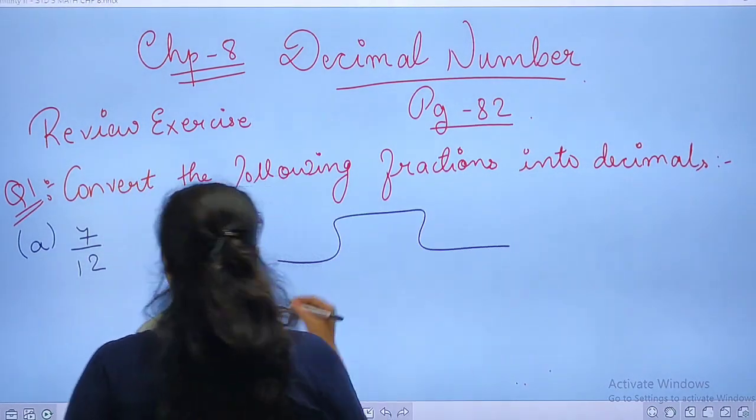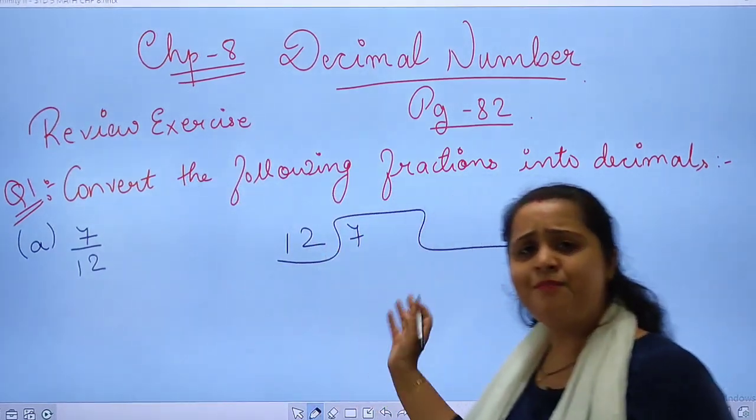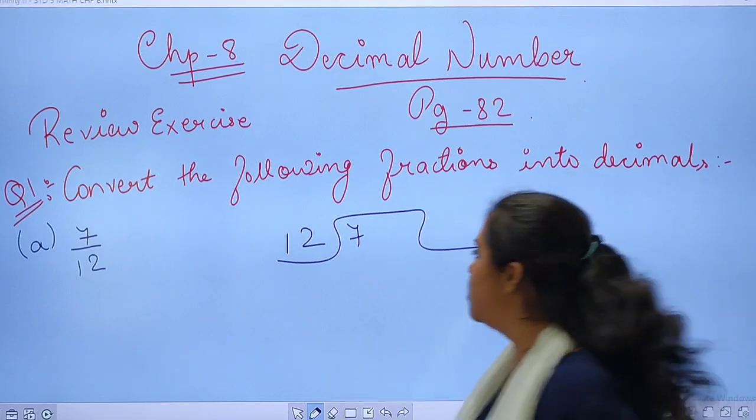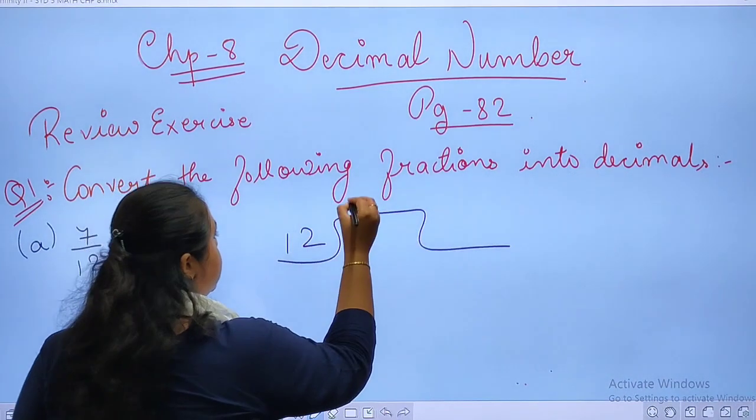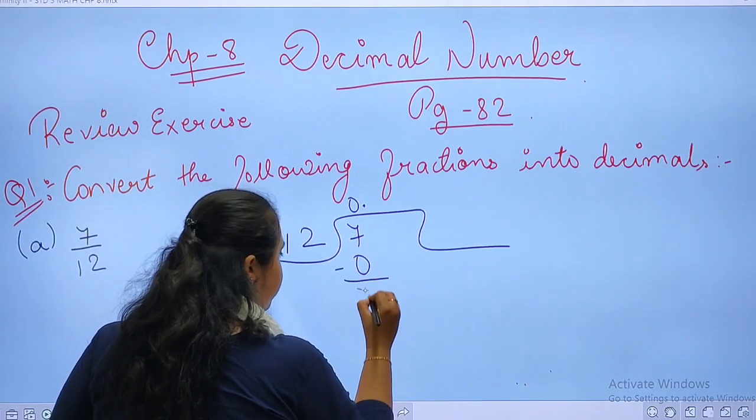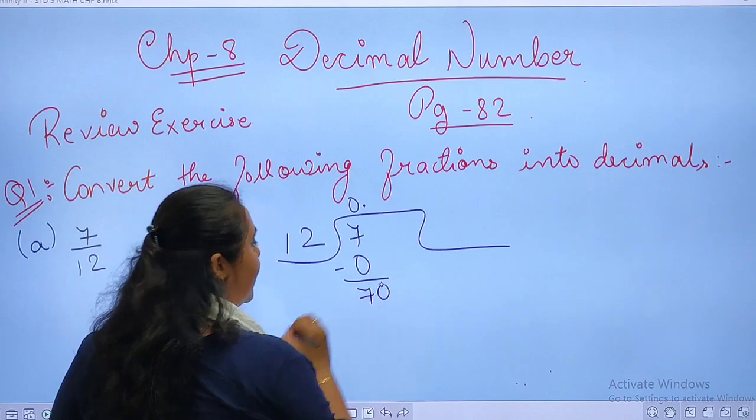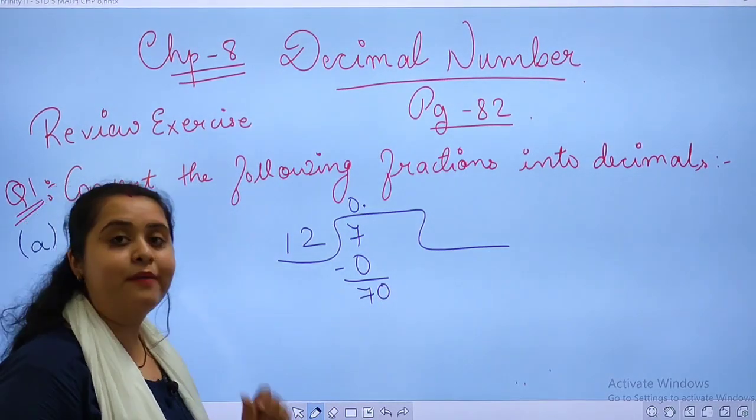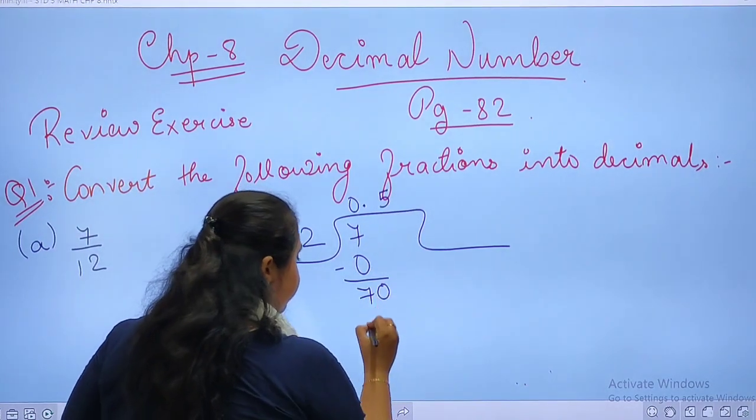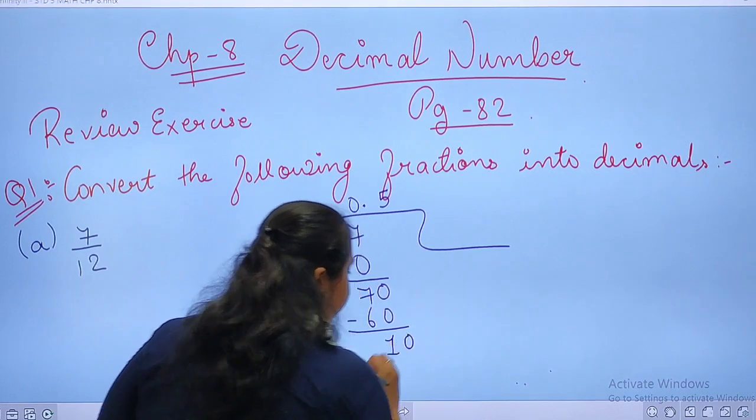So we will divide 7 by 12. Is that possible? No, it's not possible. So what we will do? 12, 0, 0. This 7 will be coming down. Again, decimal number here we can find 0. So now we have 70. 12, 5 times is 60.